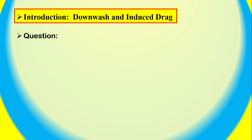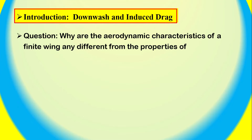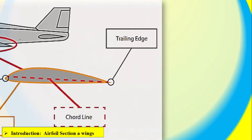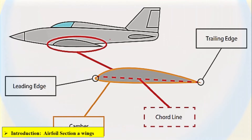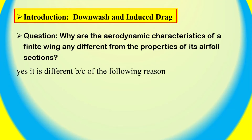First, let's have a question: How do the aerodynamic characteristics of a whole wing differ from those of its individual airfoil sections? Indeed, an airfoil is simply a section of a wing, and at first thought you might expect the wing to behave exactly the same as the airfoil, but it is different because of some reasons.